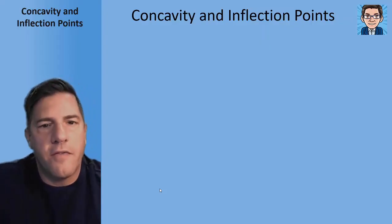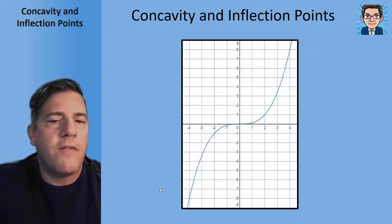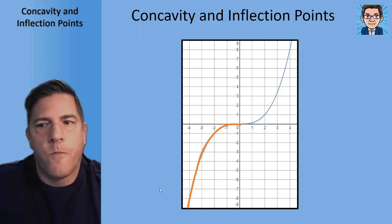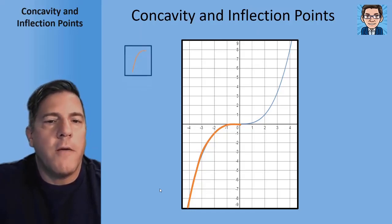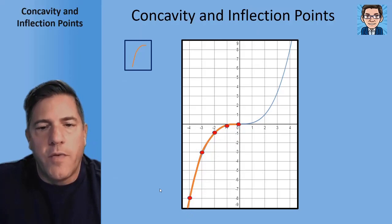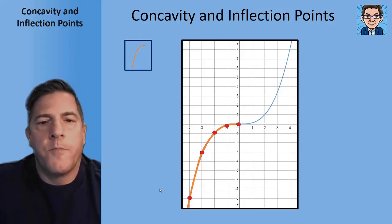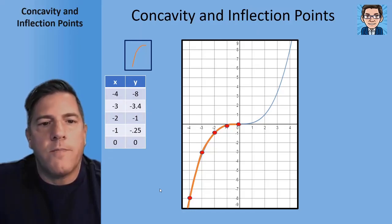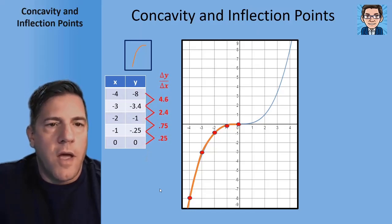Let's talk about concavity and inflection points. We're going to use this graph as an example. We're going to focus on the left part of the graph. On this part, let's take a look at some points. We've got five different points on here and let's create a table on those points. So negative 4 is at negative 8, and so forth. Now let's take a look at the average rate of change for those.